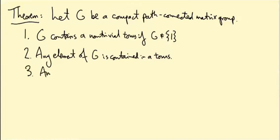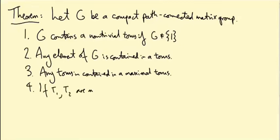Three: any torus is contained in a maximal torus, so there's plenty of maximal tori. And part four: there are many maximal tori but they're all related in some way. If T₁ and T₂ are maximal tori, then they're conjugates in the sense that there exists a g in G such that T₂ equals g T₁ g⁻¹. So in some sense the maximal torus is unique up to conjugation.